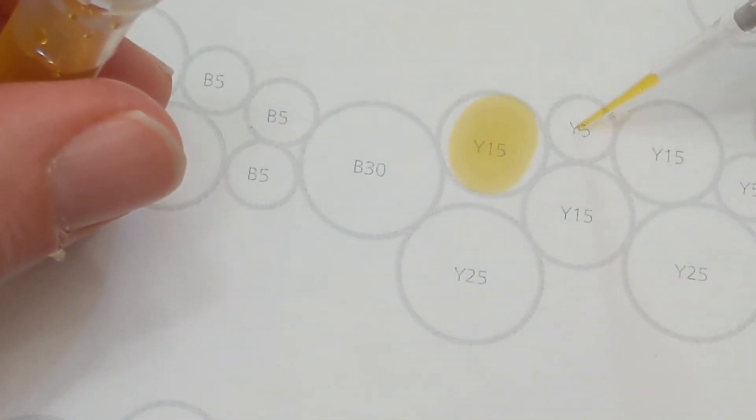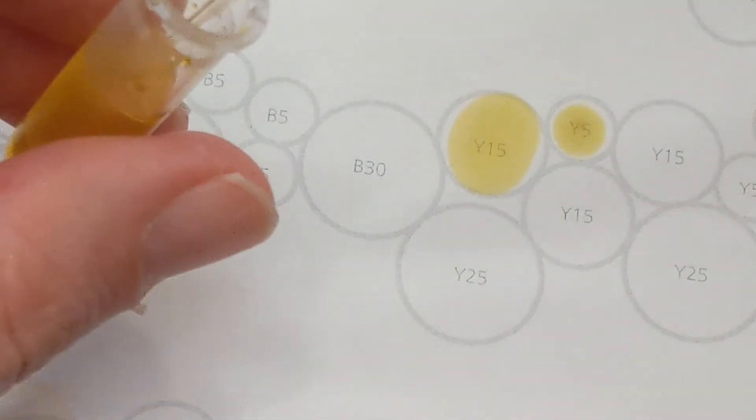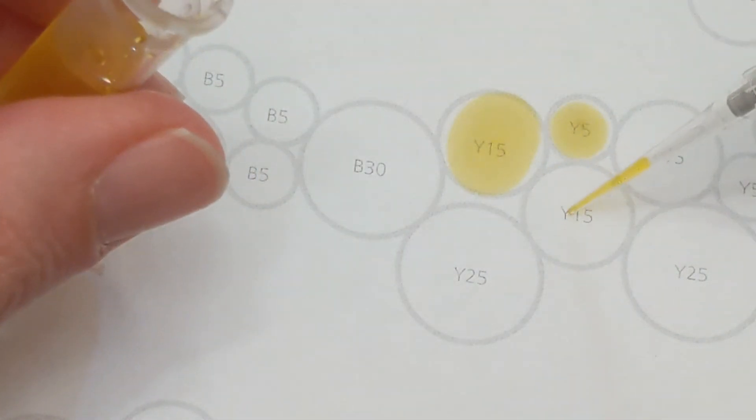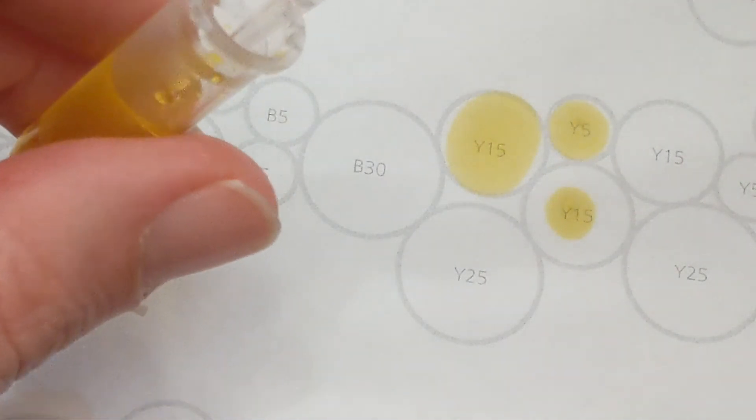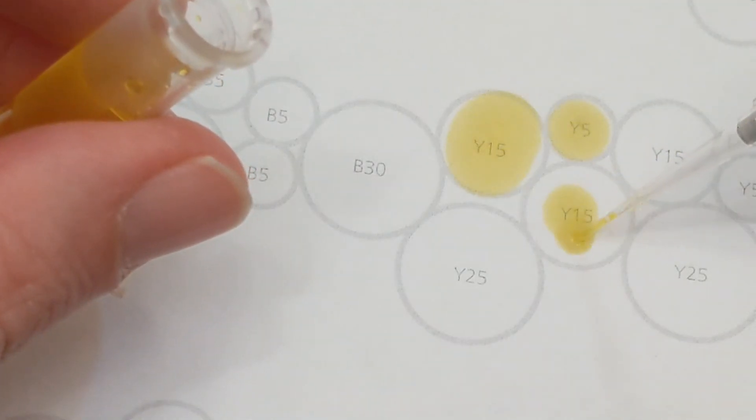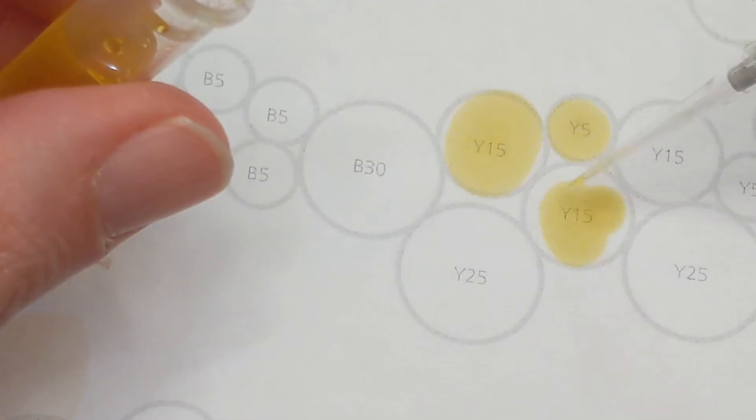I'm going to go ahead and do a Y5 since I already have my pipette set to 5. There's a couple different strategies for this. You can either do all of the same color, changing your volumes as you go, or you can do all of the same volumes and change your color as you go.